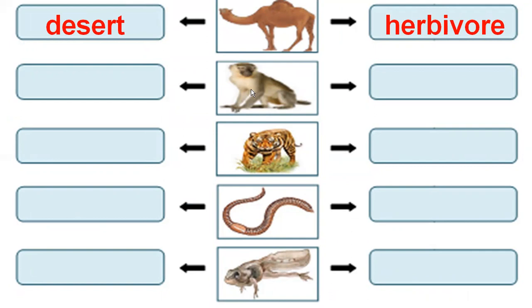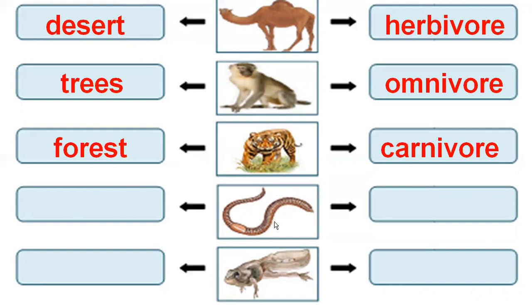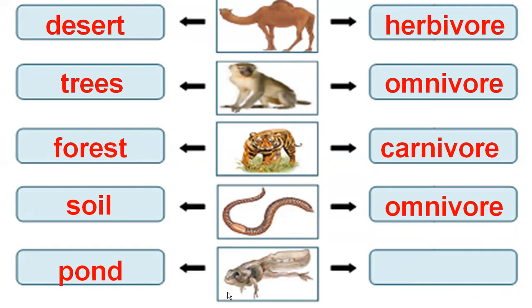Next, monkey — the habitat is trees, and the types of food monkey eat: they are omnivore. Next, tiger — habitat of tiger is in the forest, and tiger eats meat only: carnivore. Earthworm — habitat is soil, and earthworm food: omnivore. Tadpole — habitat is pond, and the diet of tadpole is omnivore. So these are the answers in your activity book.